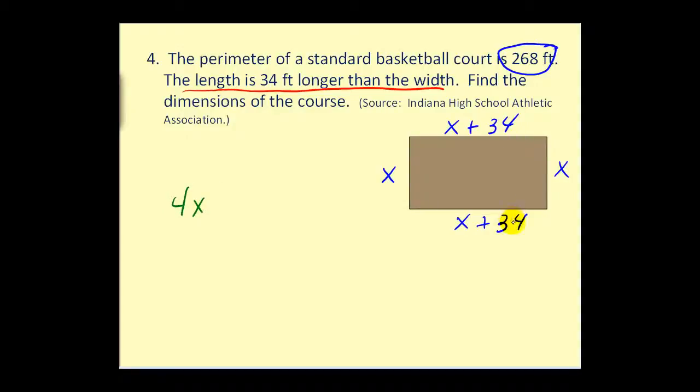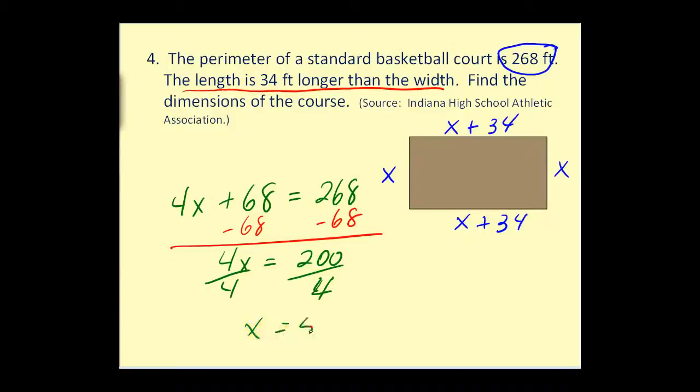So if we sum these four sides, you can see there are four x's. We'd have four x. And we also have two 34's. 34 plus 34 would be 68. It must equal 268 feet. So let's go ahead and solve this. Let's subtract 68 on both sides. This comes out to 200. We'll divide by four. Again, the most challenging part is setting it up. We have x equals 50.